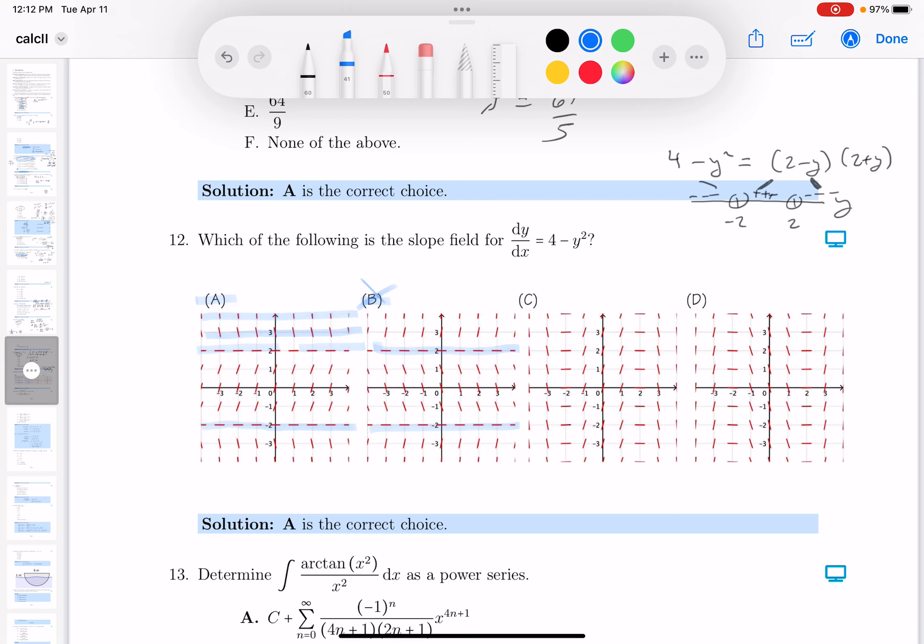And I want to say between minus 2 and 2, the slope should be all positive, and I'm seeing that. And then the slopes below the minus 2 along the y-axis should be negative, and I am seeing that.